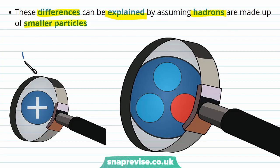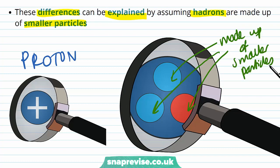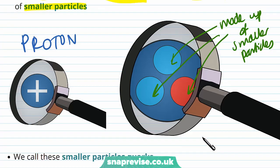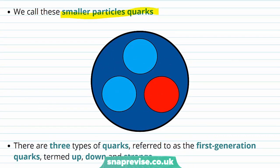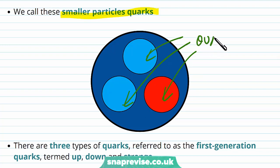These differences can be explained by assuming hadrons are made up of smaller particles. If we were to take a closer look at a proton, we'd find that it's actually made up of smaller particles. Hadrons aren't fundamental particles, which means they can be broken up into smaller particles, whereas leptons that we've previously encountered are fundamental particles so they can't be split into smaller particles. These smaller particles are called quarks, and quarks can't exist in isolation — they must be combined in order to form other hadrons.